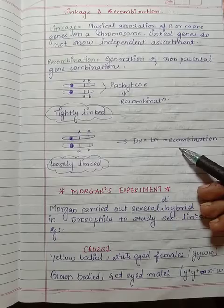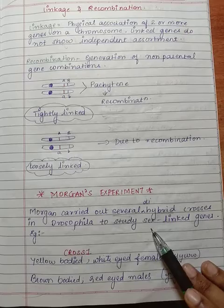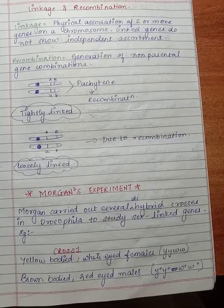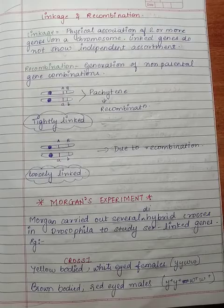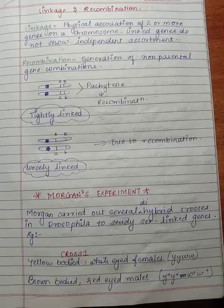Morgan's experiment: Morgan carried out several dihybrid crosses in Drosophila to study sex-linked genes. Cross 1: yellow bodied, white eyed females crossed with brown body, red eyed males.